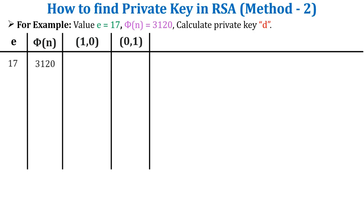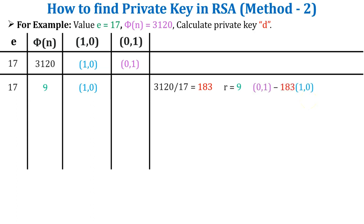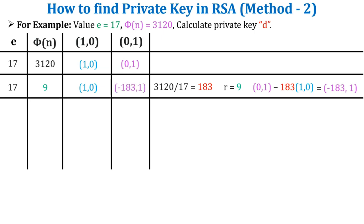The totient value is always even. The x and y coordinates are initialized as (1, 0) and (0, 1). Vector x corresponds with e and vector y corresponds with phi of n. For the first iteration, the larger value becomes the dividend and the smaller value becomes the divisor. So 3120 divided by 17 gives quotient 183 and remainder 9. The dividend updates to 9; divisor is unchanged at 17, so vector x stays at (1, 0). The new vector y is (0, 1) minus 183 × (1, 0) = (−183, 1).